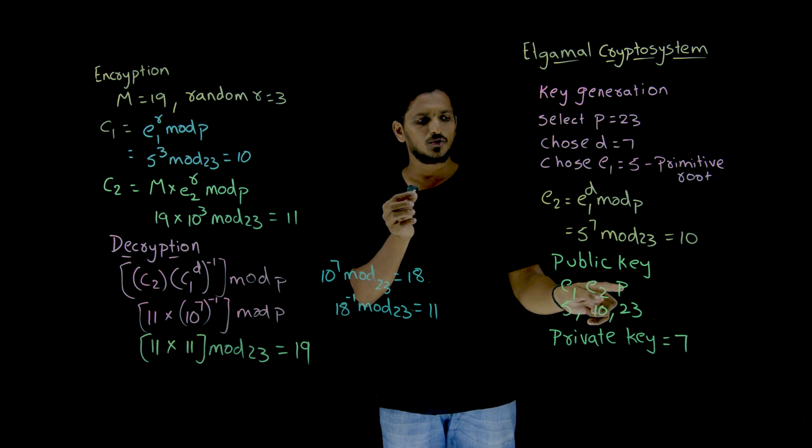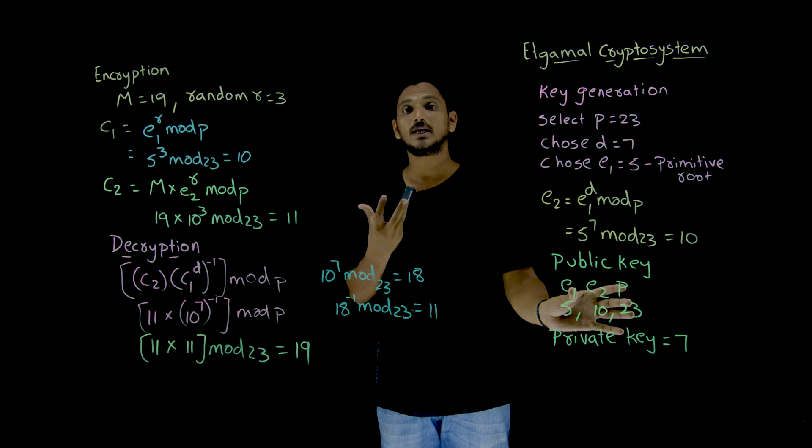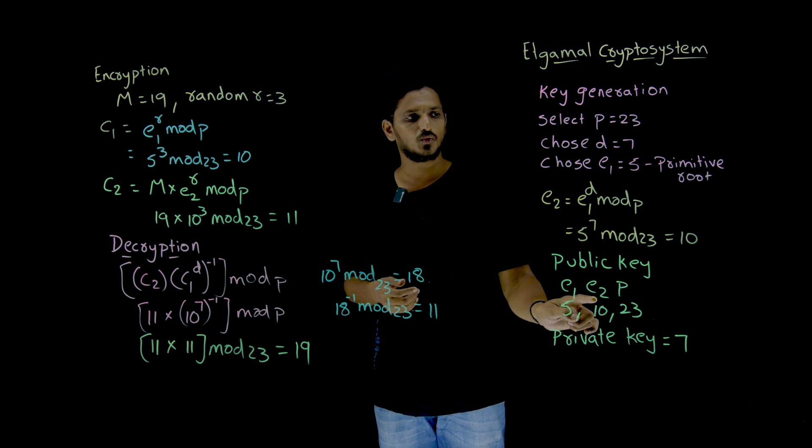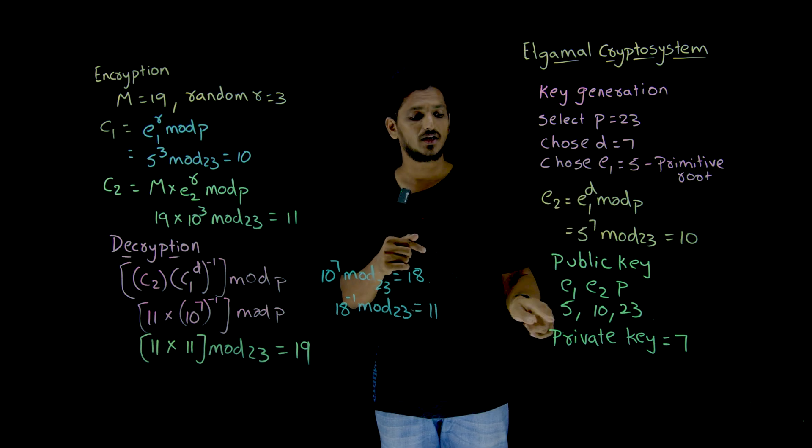So E1, E2, P are sent as public. These 3 combinations we call it as public key. Even though you know E2, from E2 identifying D is difficult. D is the private key.